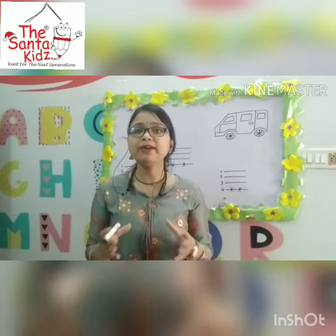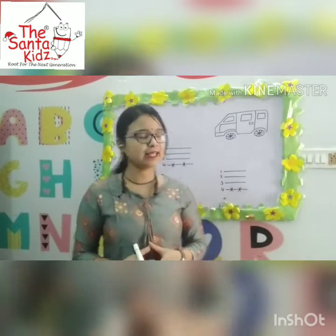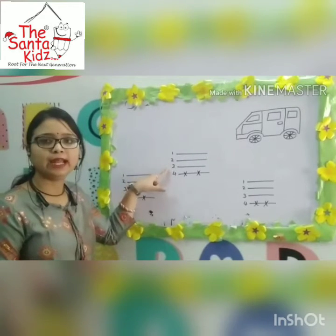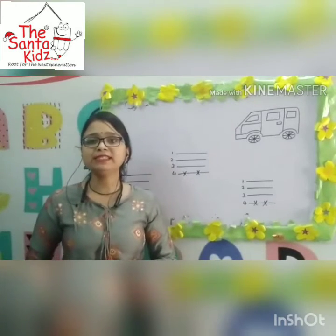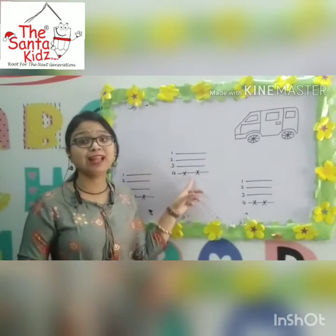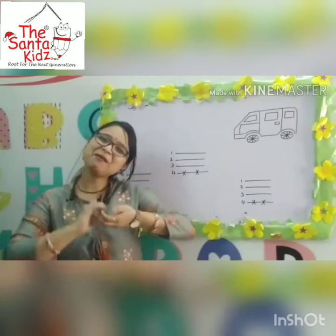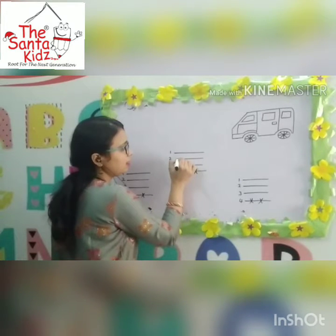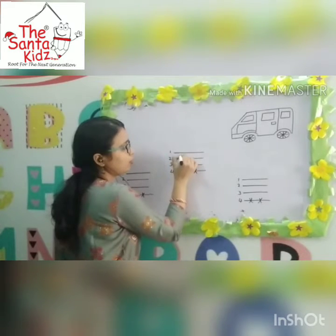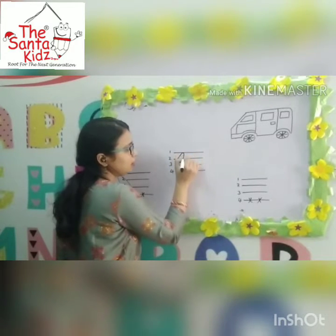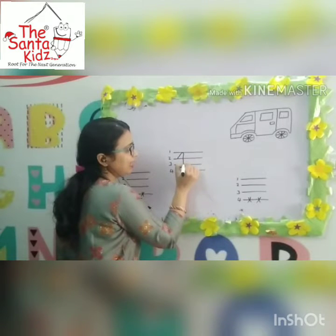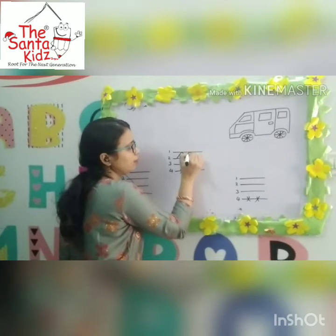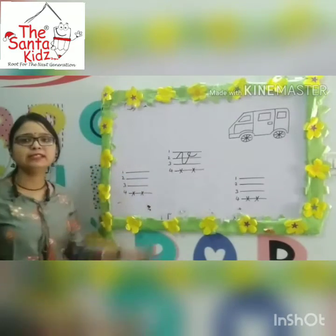As we all know, in our English notebook we have four lines: first line, second line, third line, and fourth line. For writing the capital cursive letter V, we will not touch the fourth line. Keep your pencil on the second line, make a standing line, go up and come back down, swing and touch the third line, then swing and go up and touch the first line.